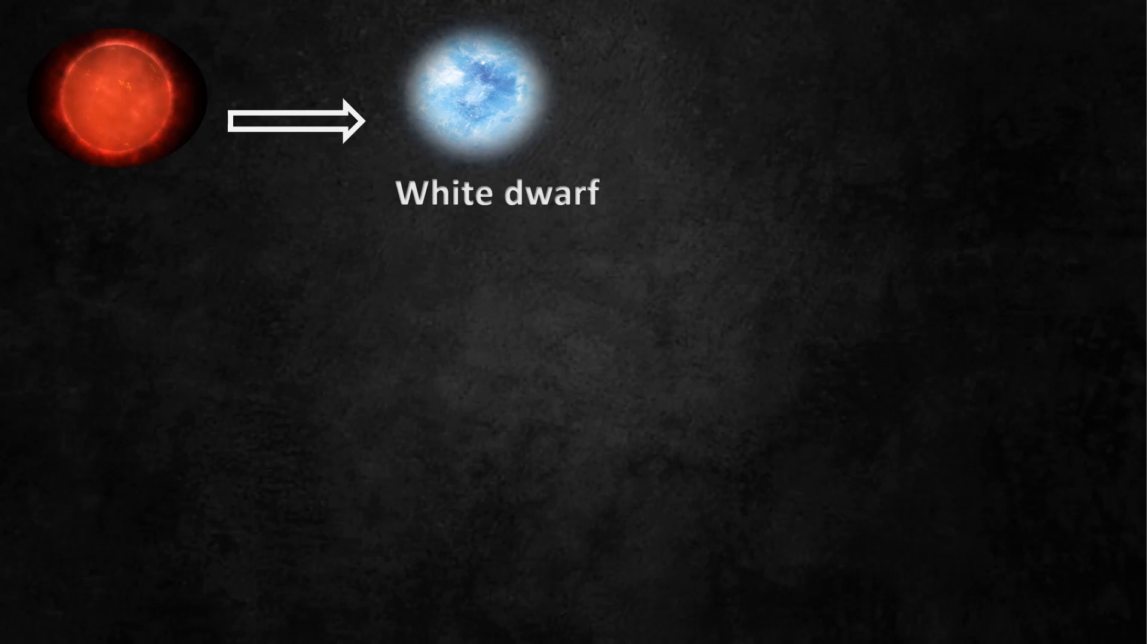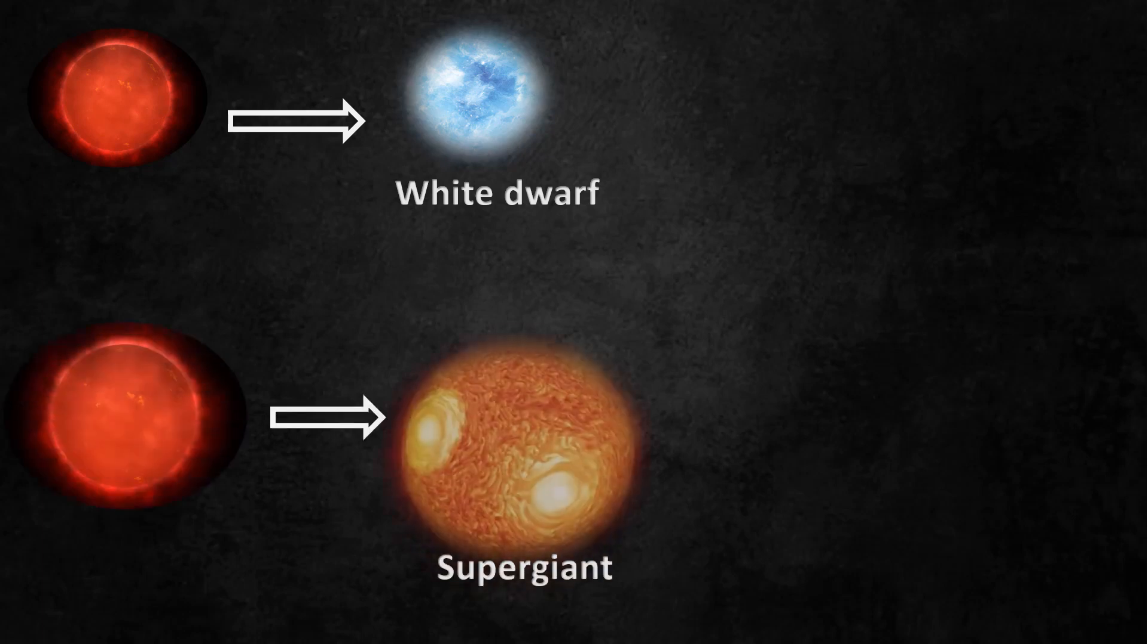If a red giant is relatively small, a white dwarf is formed. However, if a red giant is big enough, it forms supergiant.